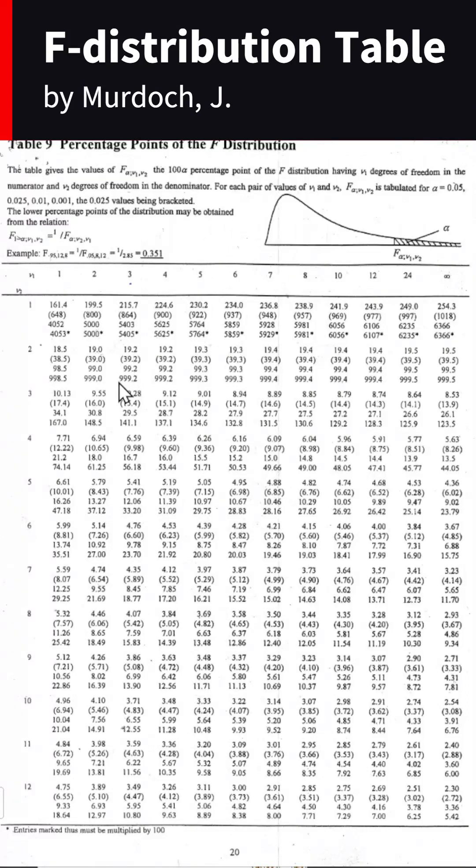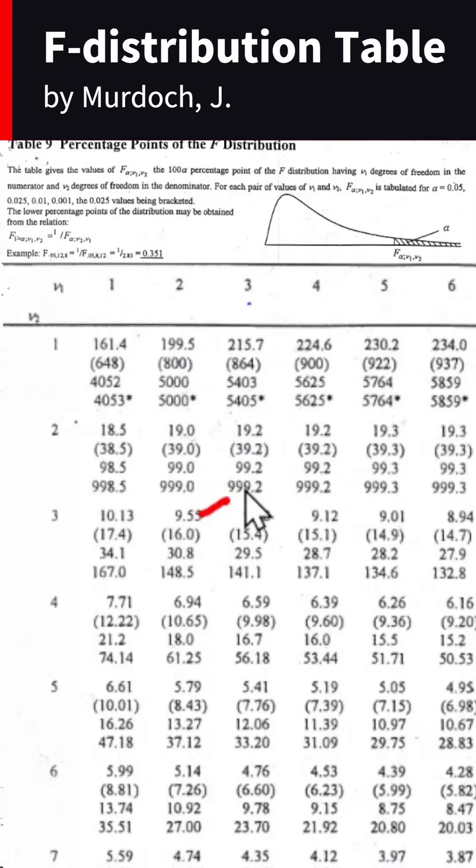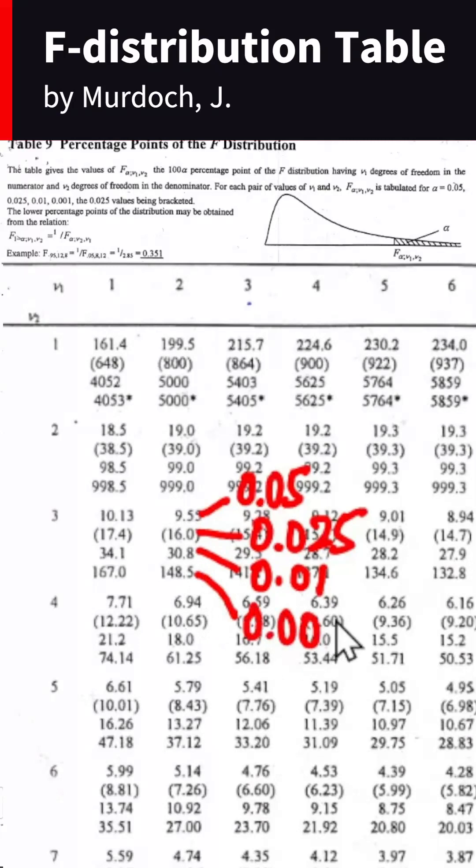Which means that for the corresponding degrees of freedom, the first value is for the significance level 0.05. The second value, which is in the bracket, is for 0.025. The third value is for 0.01, and the last value is for 0.001.